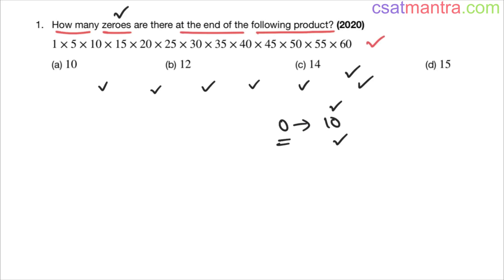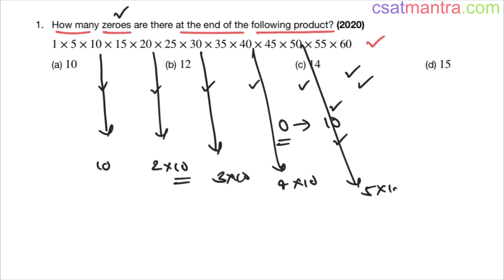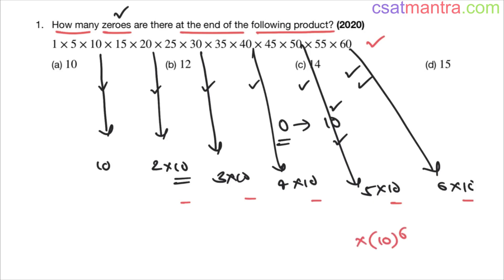We have 10; 20 is 2×10; 30 is 3×10; 40 is 4×10; 50 is 5×10; 60 is 6×10. So how many tens are there? 1, 2, 3, 4, 5, 6 — there are 6 tens that are directly visible, which are very clear.